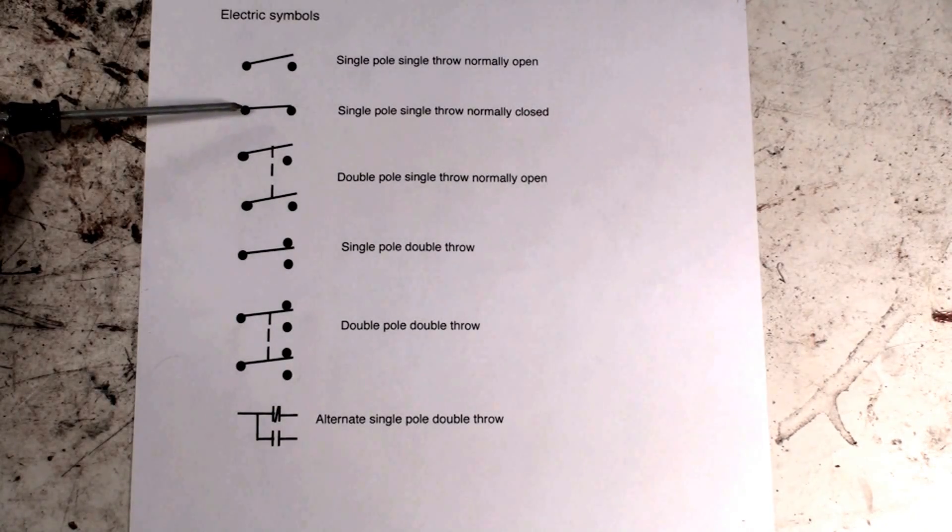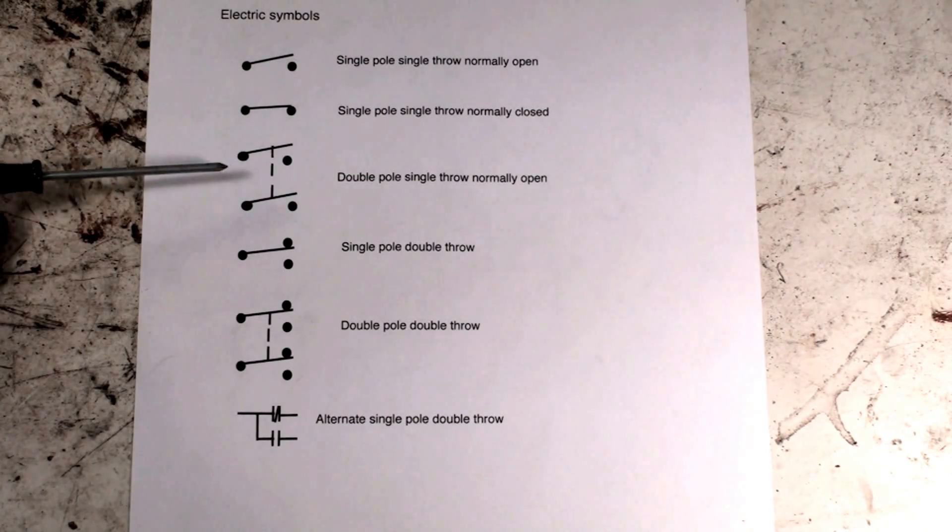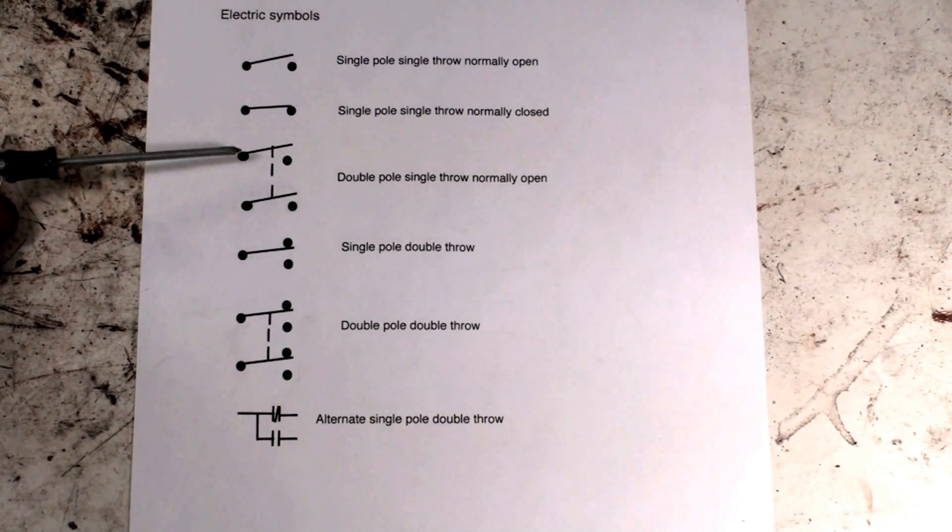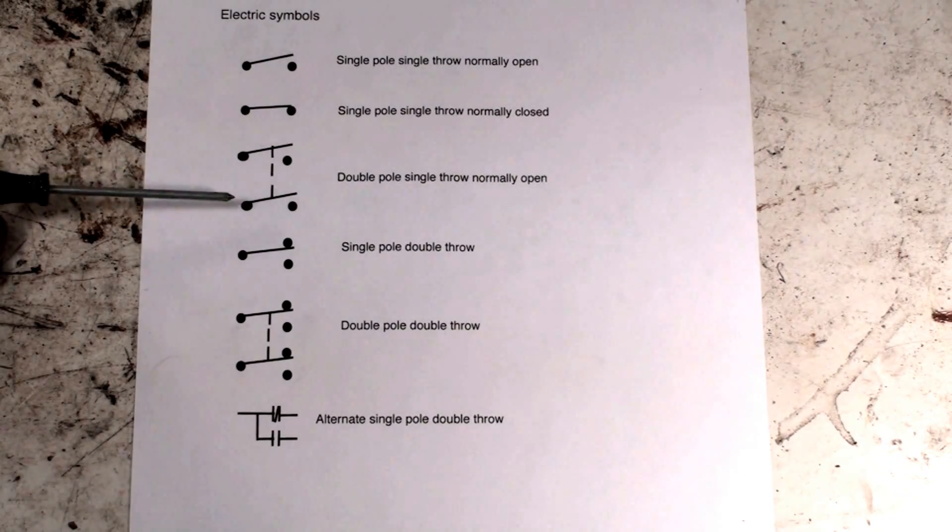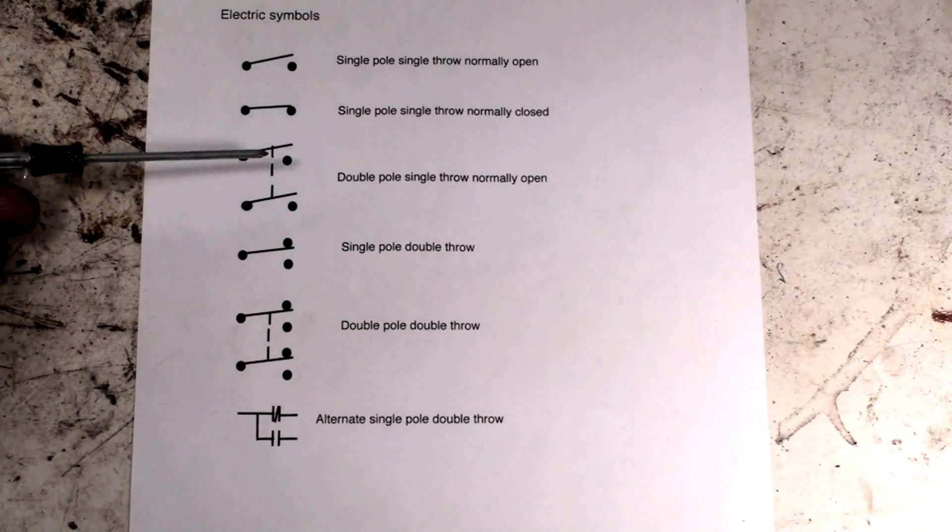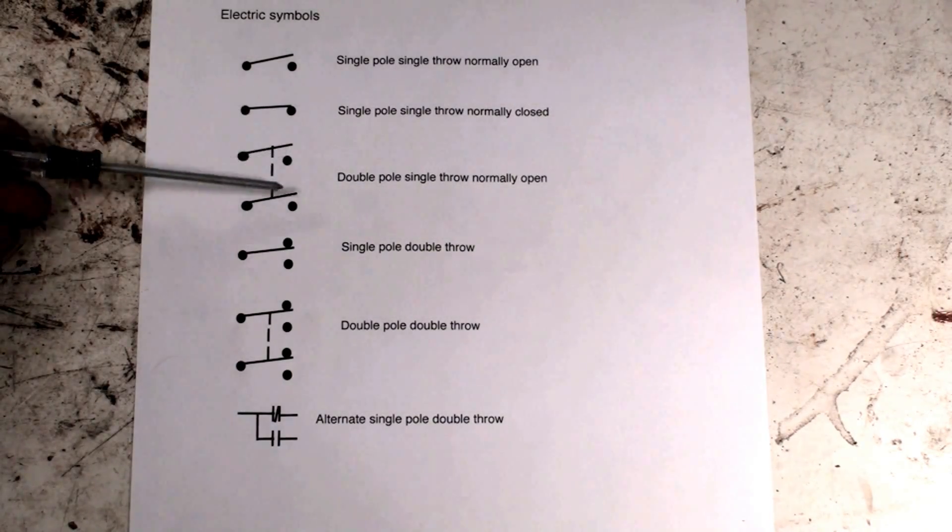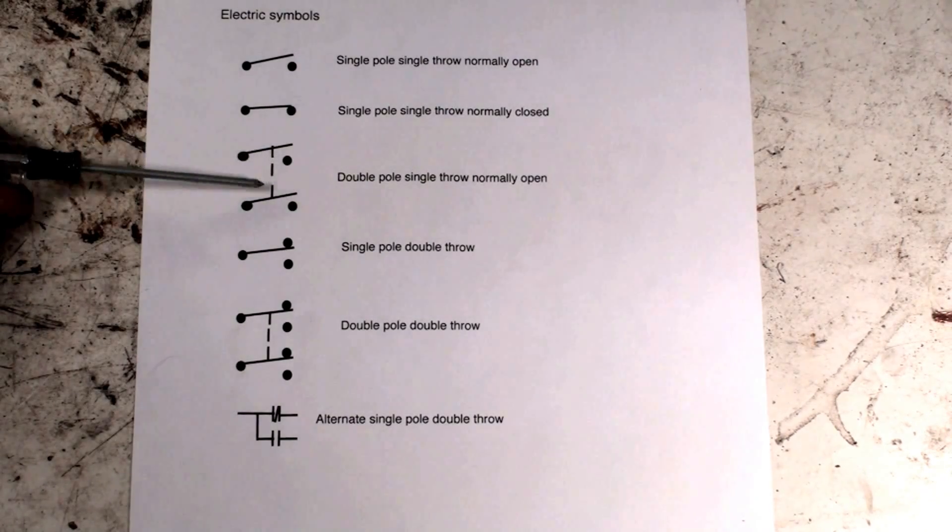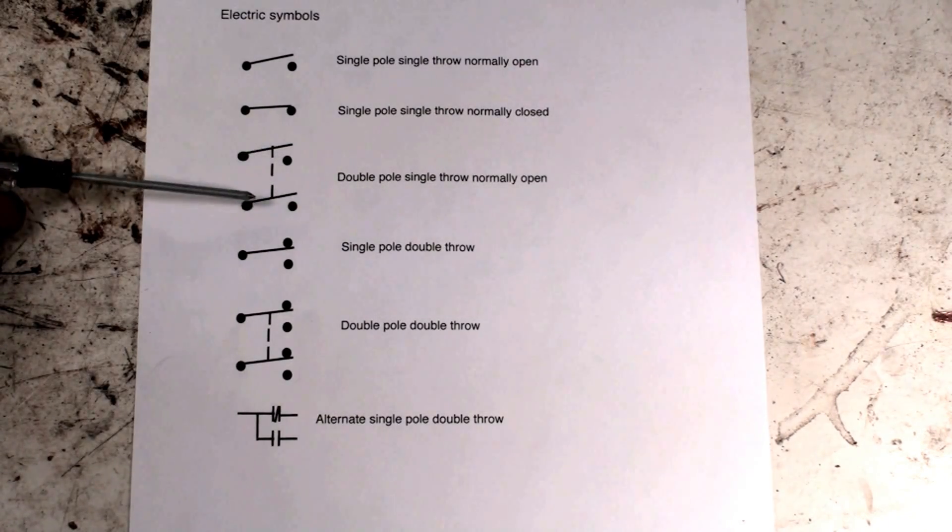The next one down is a double pole single throw normally open. There's two poles - one pole here, one pole there. There's a single throw because it can only go one way, but the dotted line tells me they're hooked together, so if I turn one on, the other one goes off.